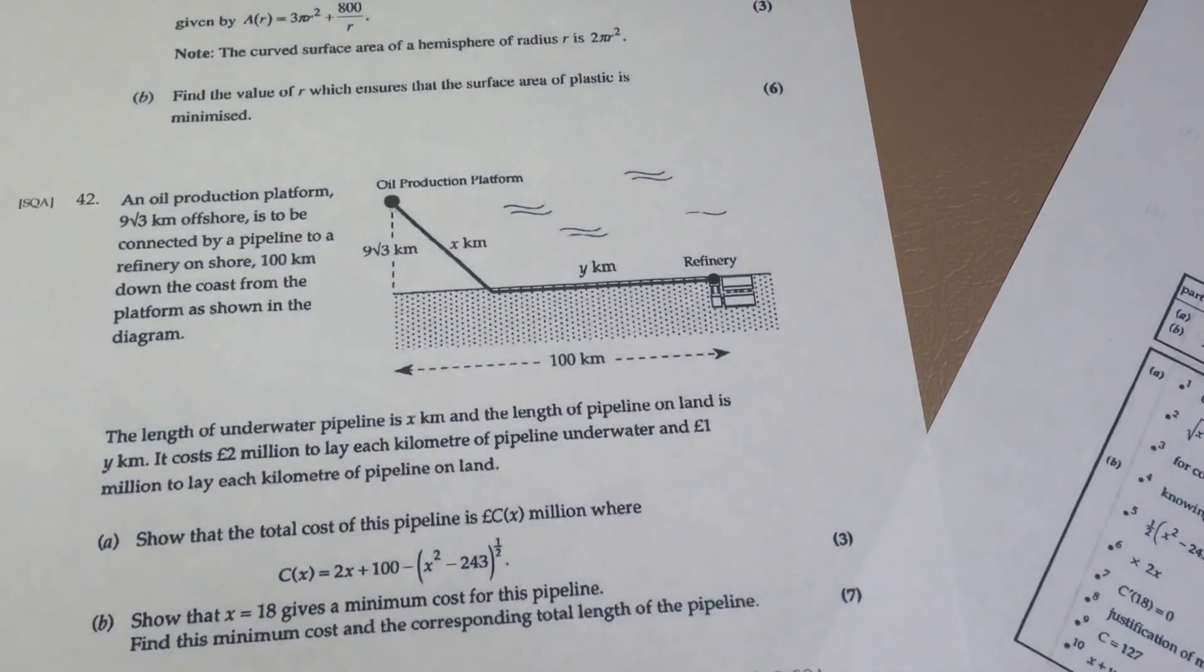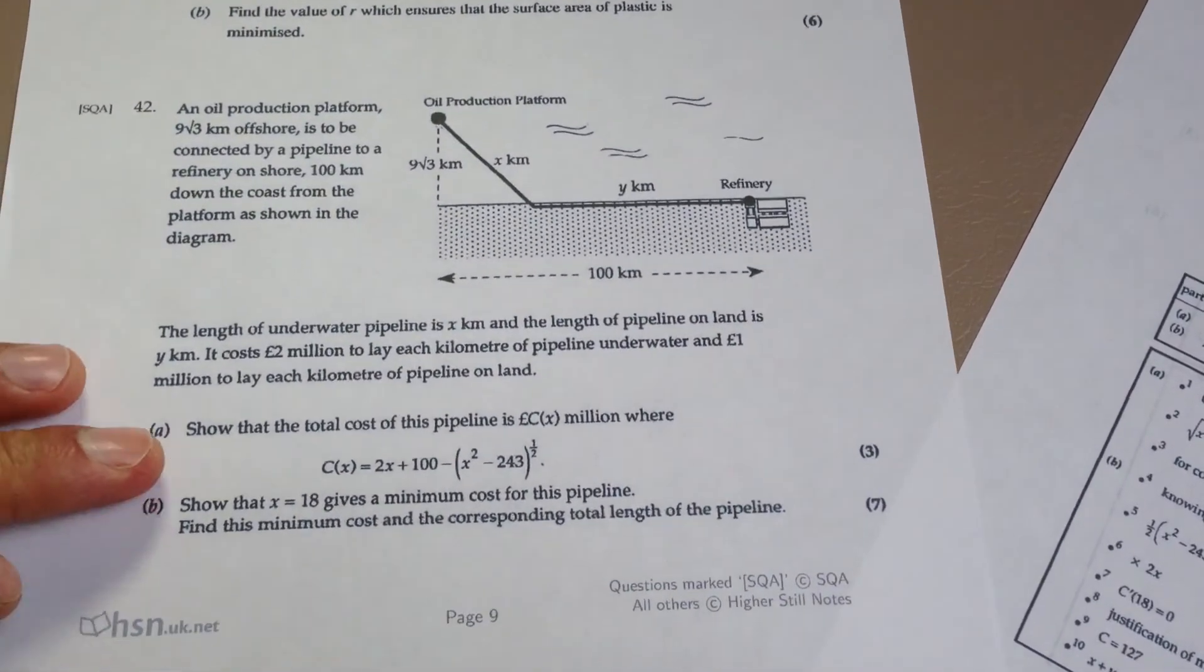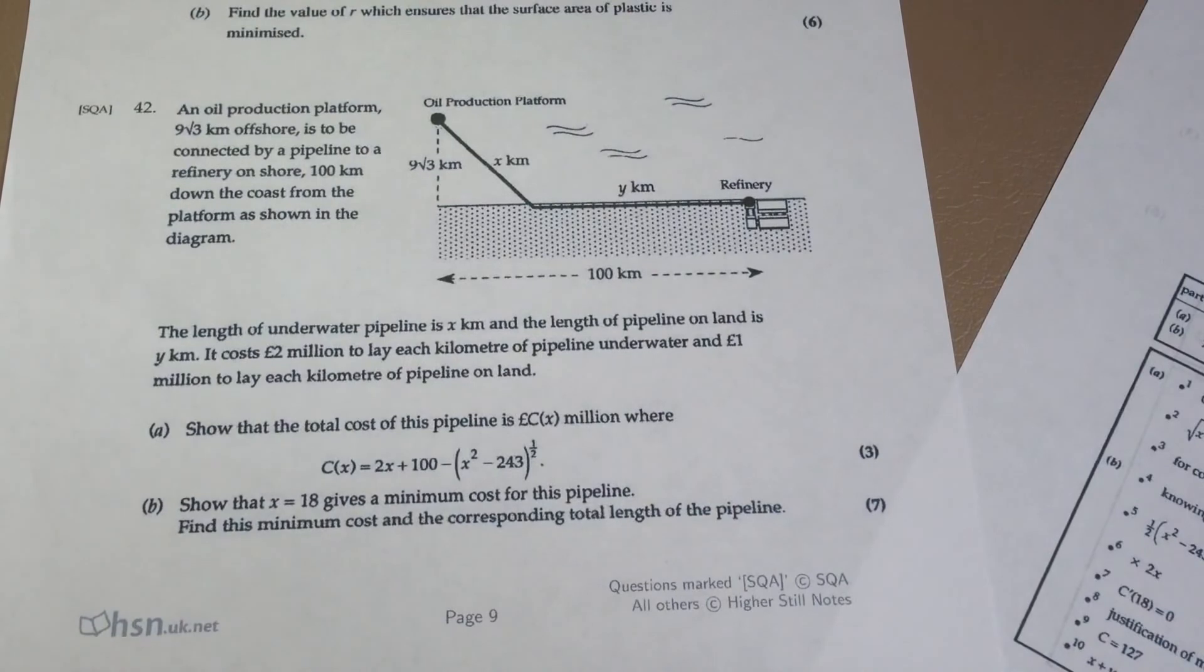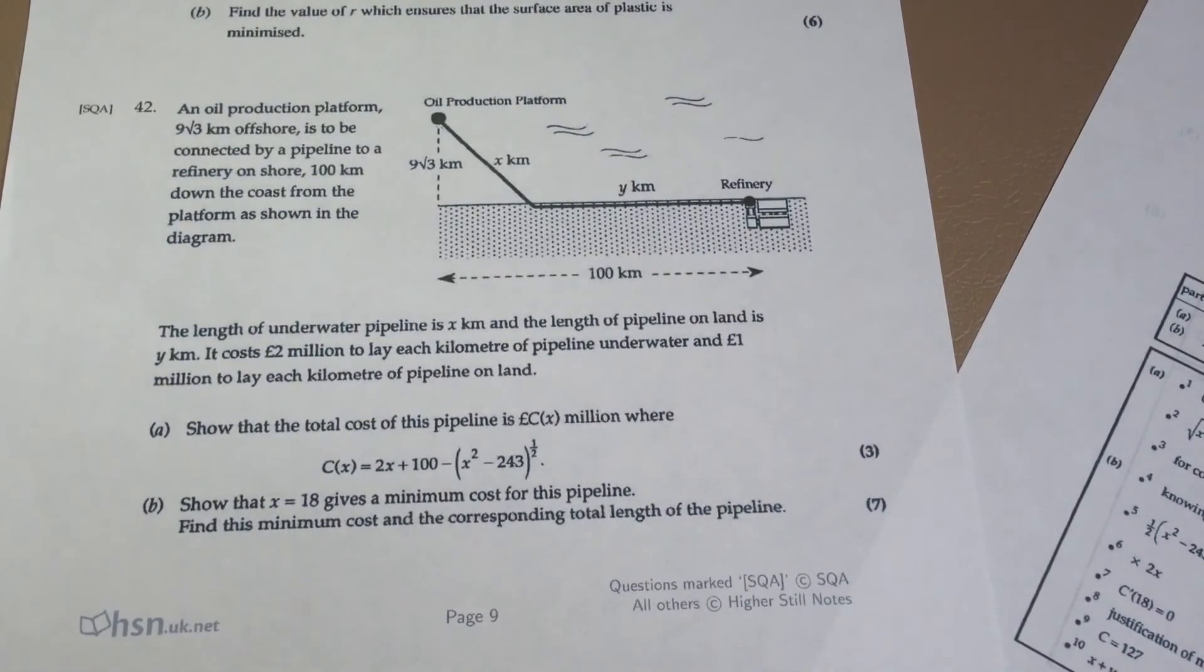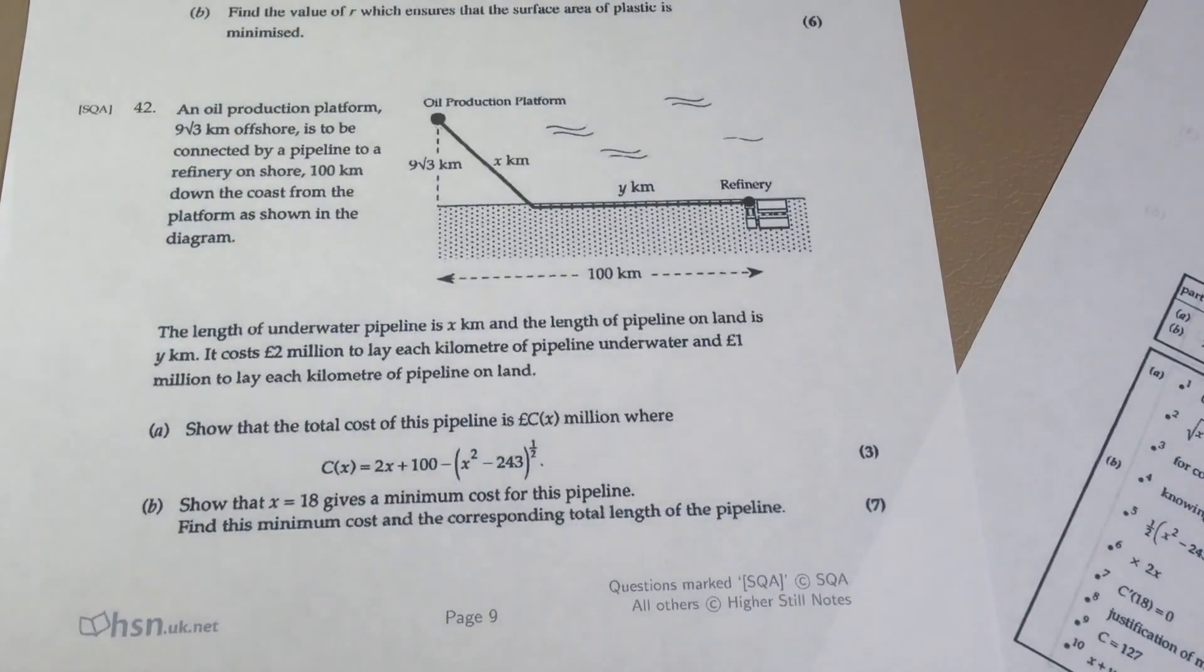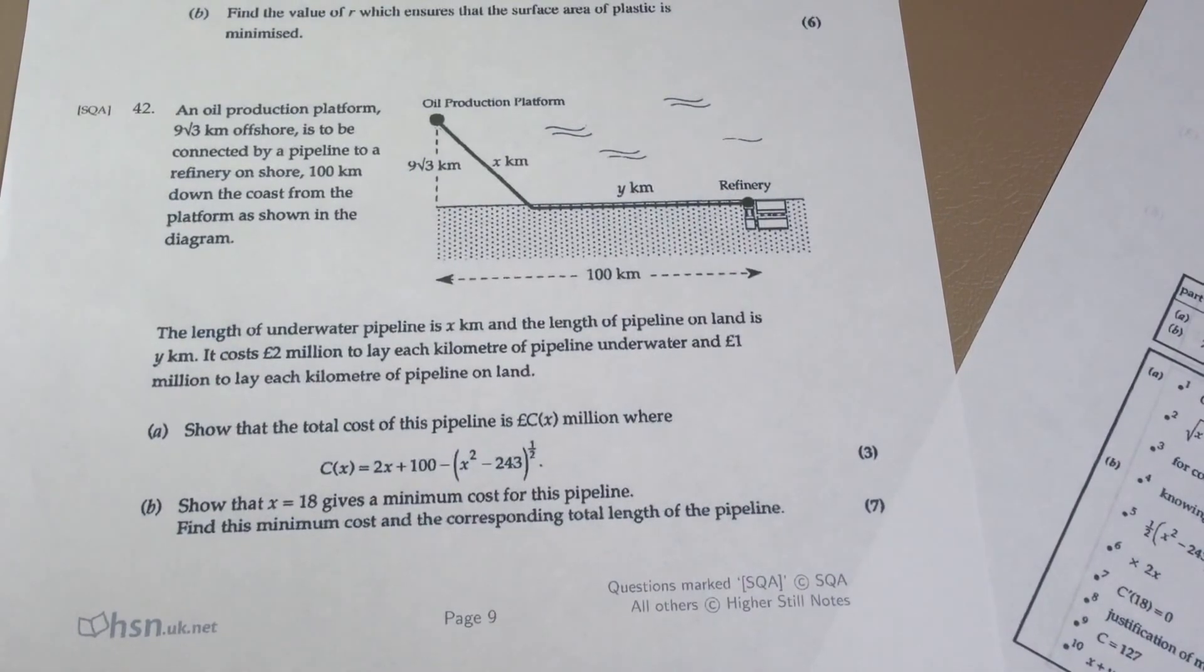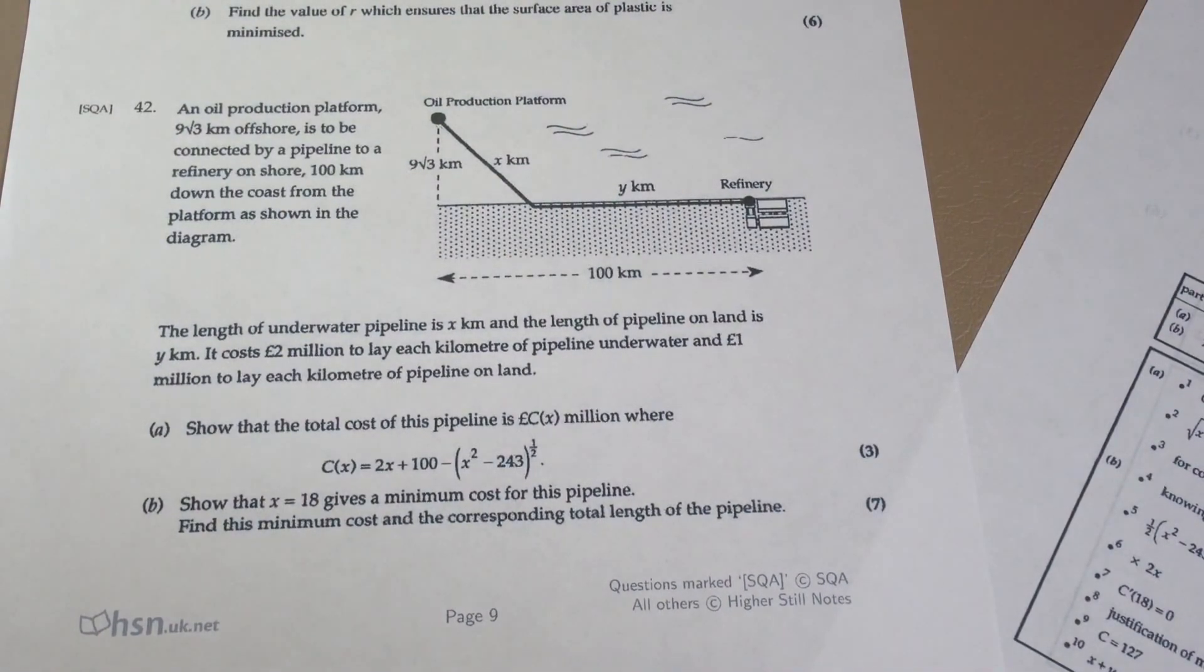That's that entire question done. We have shown the total cost of the pipeline does, in fact, equal that. We show that when x is 18, we do, in fact, get a stationary point. Not only a stationary point, but a minimum stationary point. And we find the minimum cost and the corresponding total length of the pipeline, all for 10 marks. Thanks very much, folks. Appreciate you watching. If you do have any questions or any other question you'd like me to go over, feel free to ask. Leave comments and, of course, subscribe. It will be greatly appreciated. Till next time.